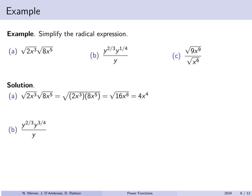For the second example: y^(2/3) · y^(3/4) / y. All terms have the same base y, so we add exponents in the numerator and subtract for the denominator: y^(2/3 + 3/4 - 1). Simplifying those fractions gives 2/3 + 3/4 − 1 = 5/12. So the result is y^(5/12).